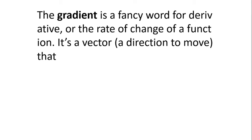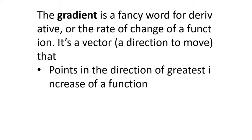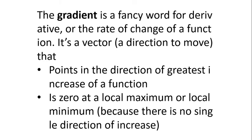The next application is the gradient — simply another word for derivative, or the rate of change of a function. It's a vector, a direction to move, that points in the direction of greatest increase of a function, and is zero at a local maximum or local minimum because there is no single direction of increase. Basically, gradient tells you the direction of greatest increase of the function — it points you toward the highest point. That's why it's zero at local maximum (the highest) and local minimum (the lowest).